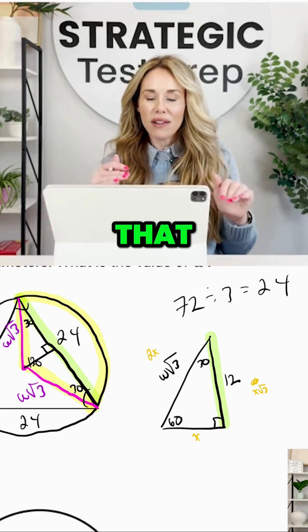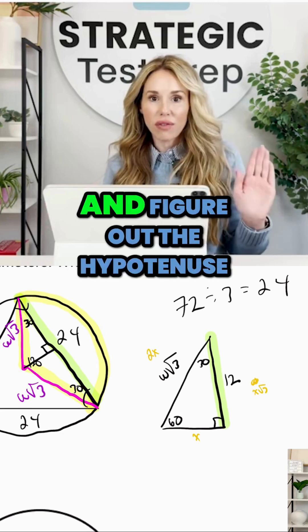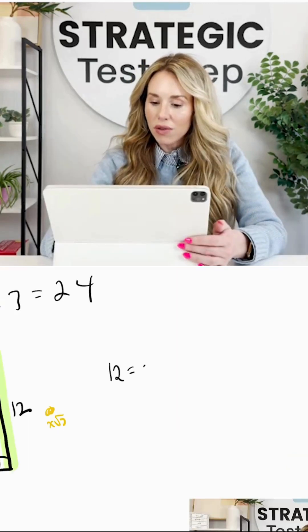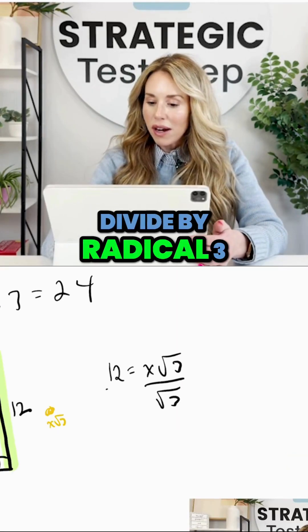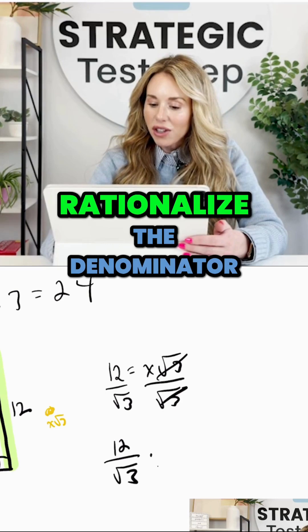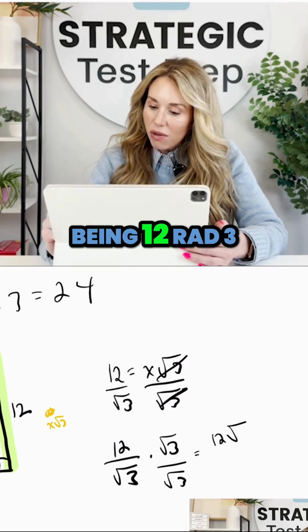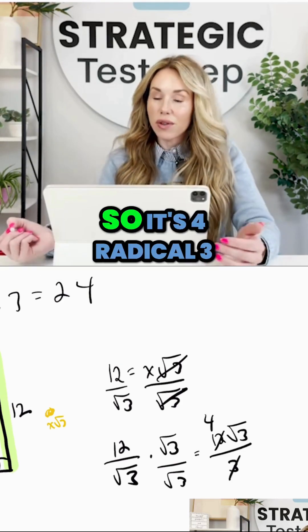Don't worry about that yet. Let's just try to figure out what x is. If we can figure out what x is, then we'll be able to relate that one side of 12 to the other sides and figure out the hypotenuse. So 12 equals x√3. Divide by √3 on both sides. Now how do you simplify that? We've rationalized the denominator, so that ends up being 12√3 over 3, so it's 4√3.